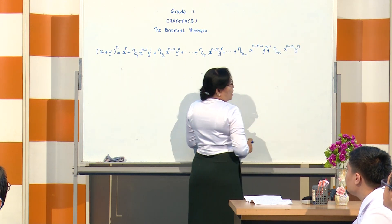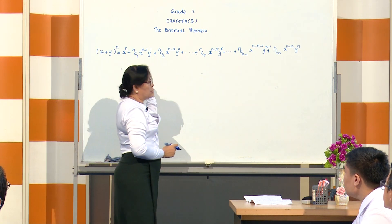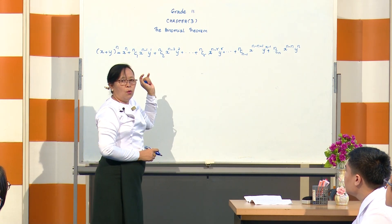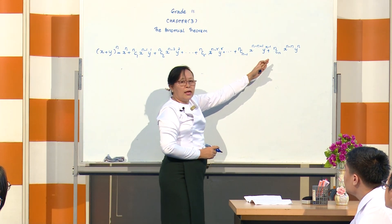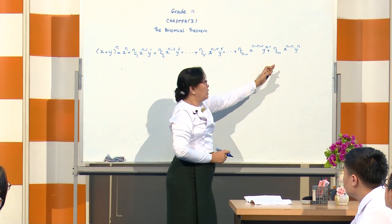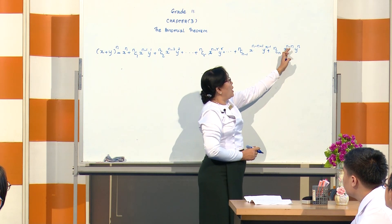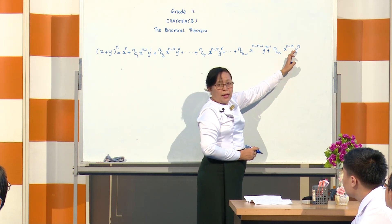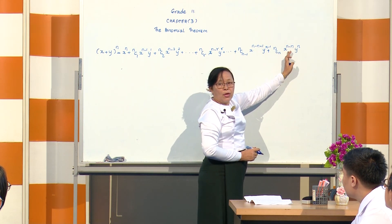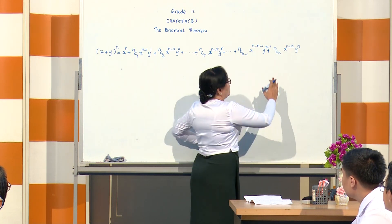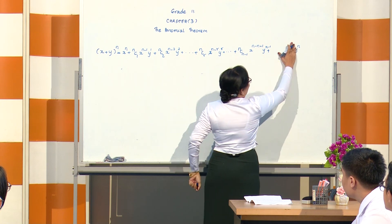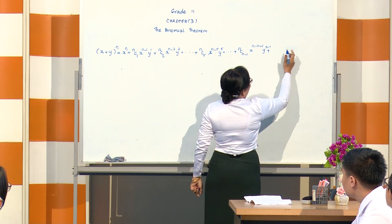In the general term, nC0 is 1, nC1 is 1. Here x minus 1 equals 0, and if y equals n, note these values carefully.